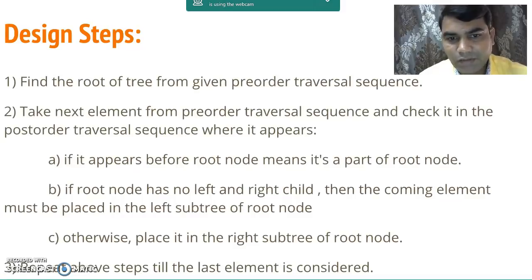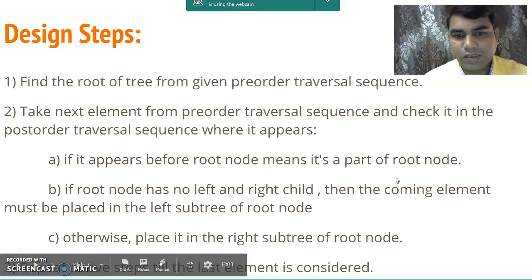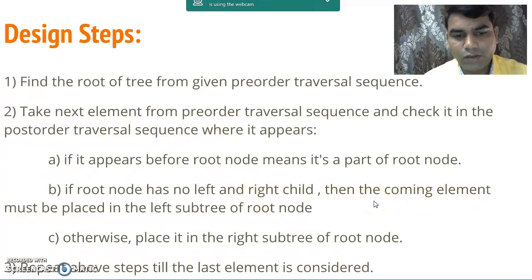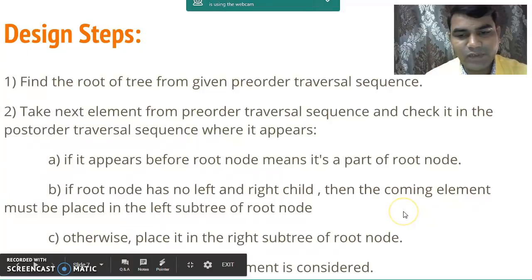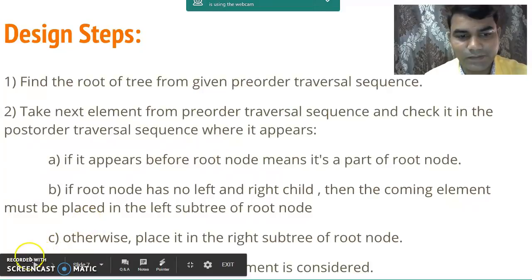If it appears before the root node, it means it is part of the root node. If the root node does not have a left and right child then the coming element must be placed in the left subtree of the root node. Otherwise we will place it into the right subtree of the root node. In step number 3 we repeat all the above steps till the last element gets considered.